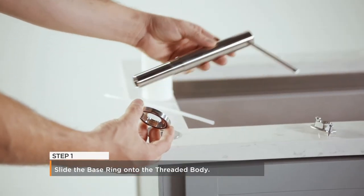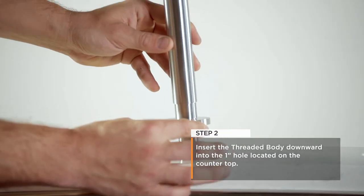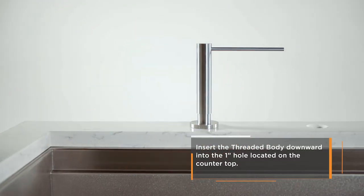Step 1: Slide the base ring onto the threaded body. Step 2: Insert the threaded body downward into the 1-inch hole in the countertop.